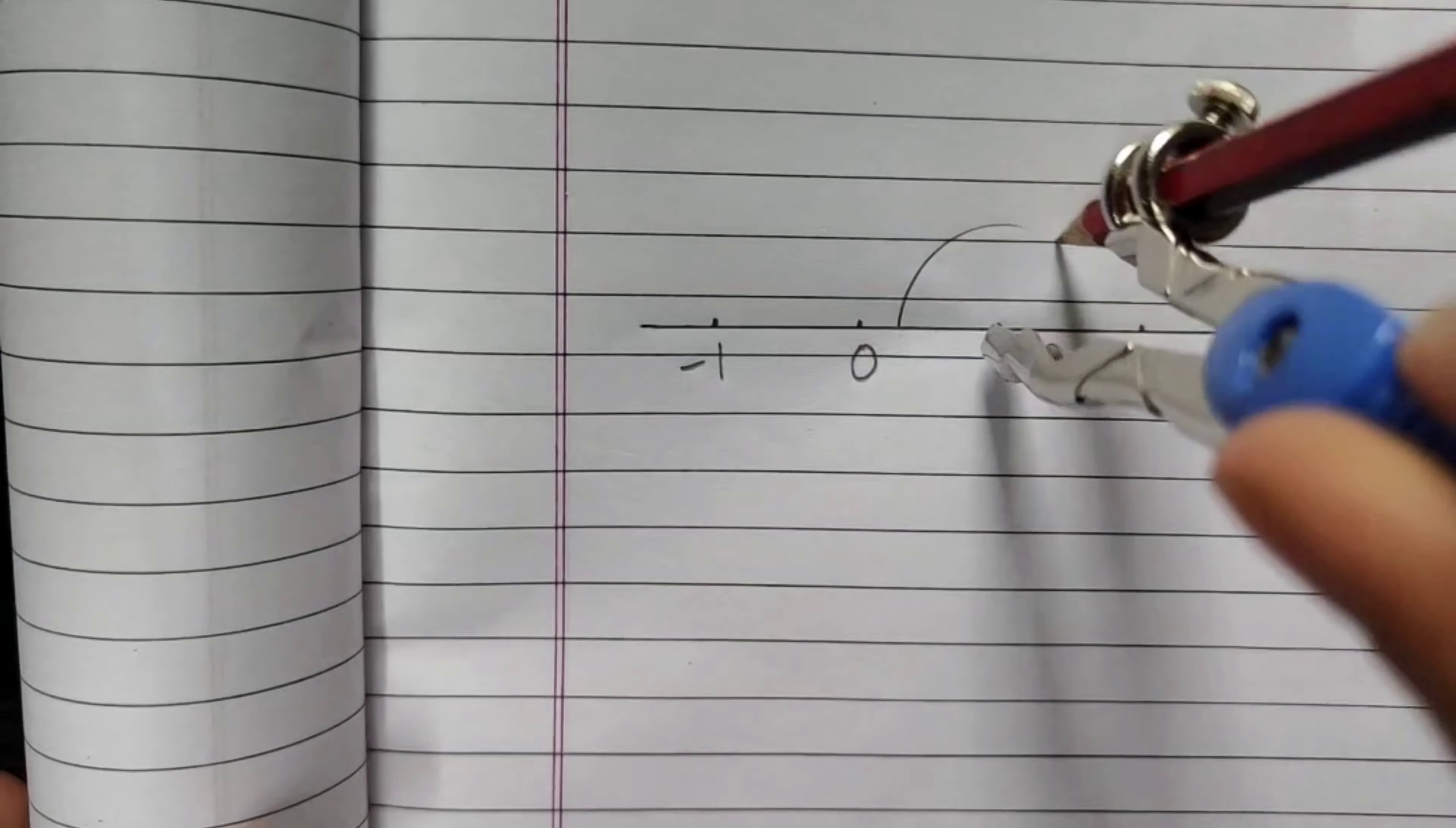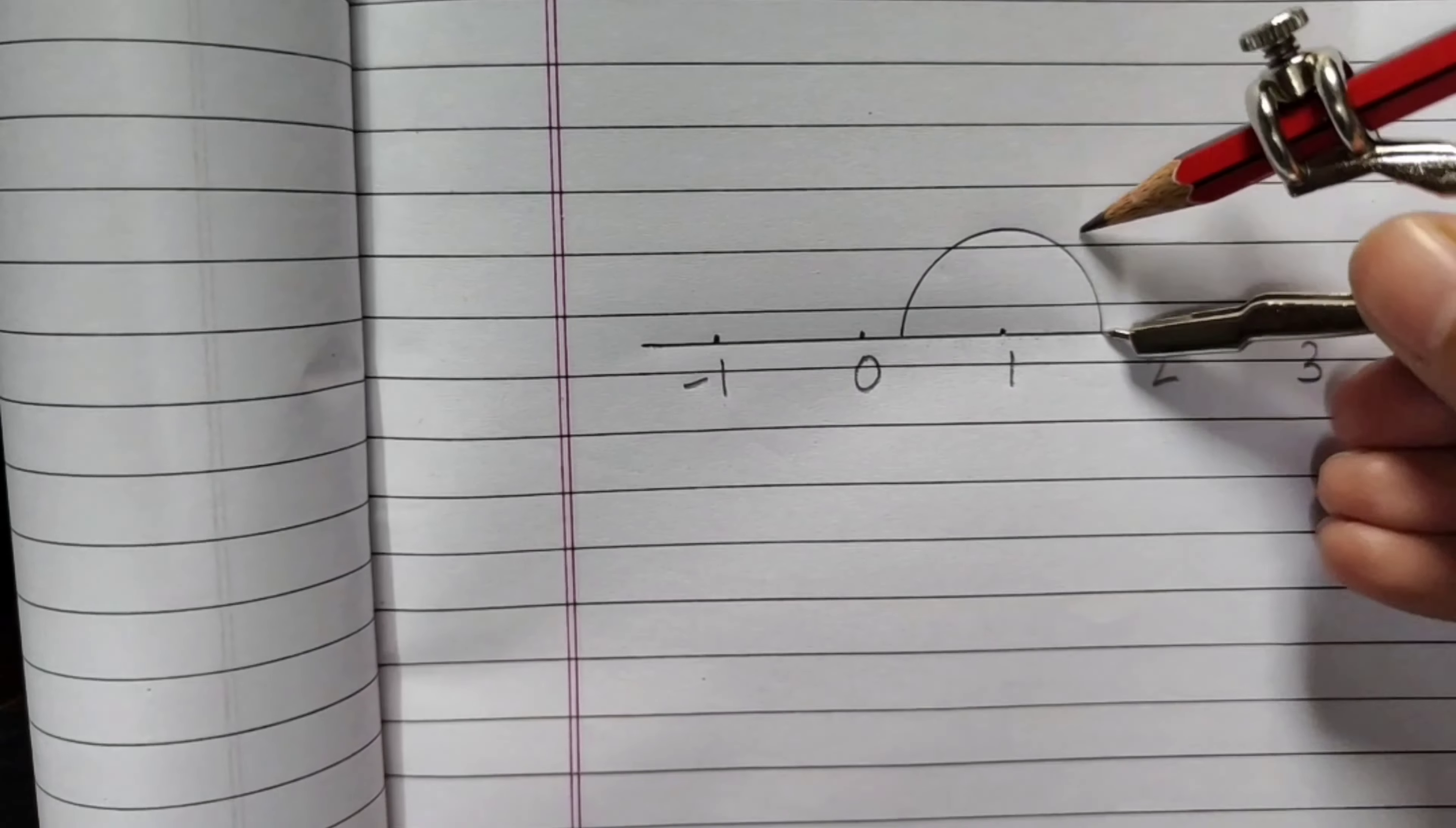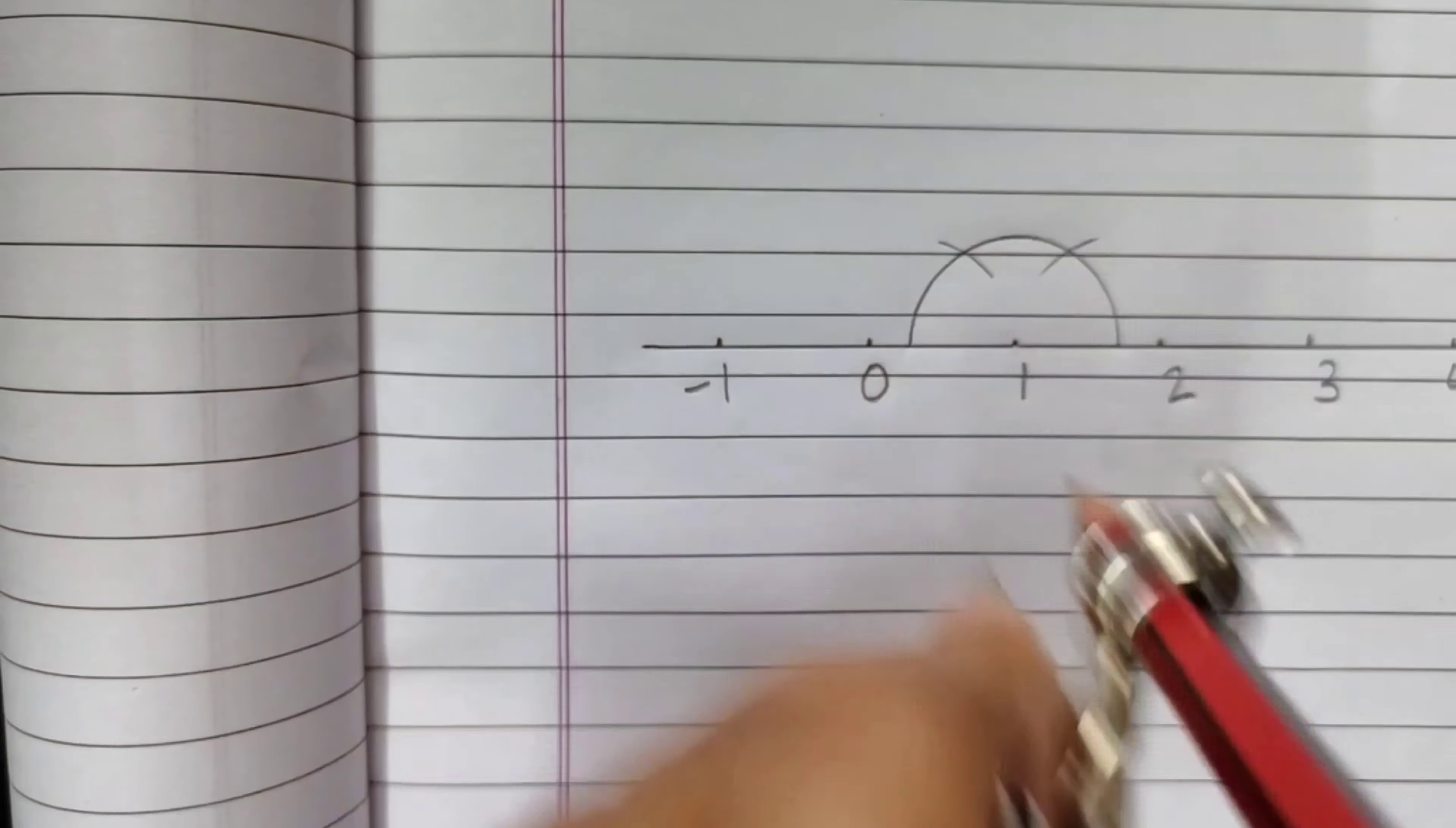In this video, first of all, you have to make root 2 exactly like I have shown you in the previous video. First of all, we will take a measurement, a number line. And in this video, I have taken a gap in 2-2 units.